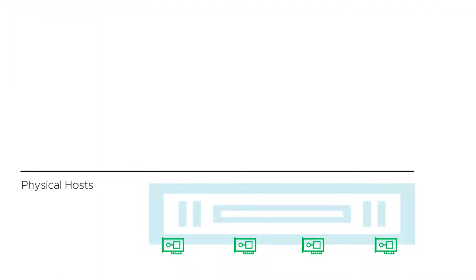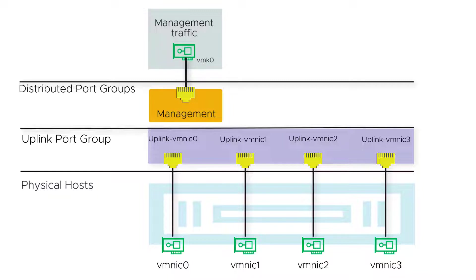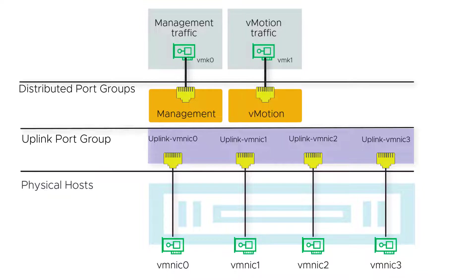In this example, we'll start with some hosts containing the same number of physical adapters and with the same physical network connectivity. The configuration we'll arrive at on each host is as follows: four physical adapters assigned to the vSphere distributed switch, vmNIC0 through vmNIC3, assigned to uplink vmNIC0 through uplink vmNIC3. A distributed port group named management, to which all the VM kernel adapters vmK0 are assigned for management traffic. A distributed port group named vMotion, to which all the VM kernel adapters vmK1 are assigned for vMotion traffic.